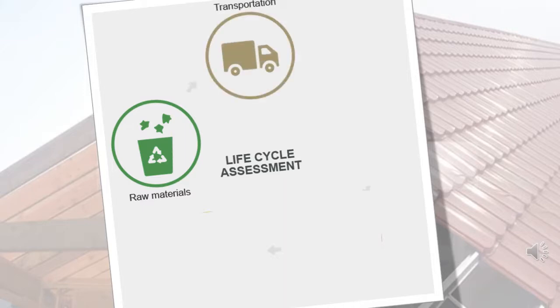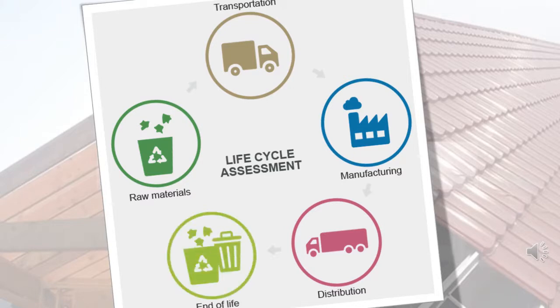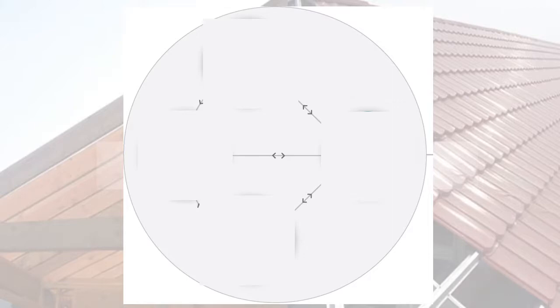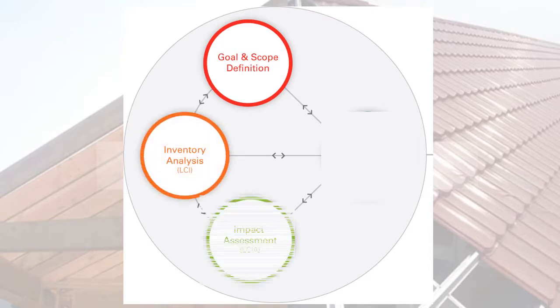LCA, or Life Cycle Assessment, is a technique to assess environmental impacts associated with all the stages of a product's life, from raw material extraction through transportation, manufacturing, distribution, use, and disposal after its useful life. LCA is carried out in accordance with the requirements and procedures set by the ISO 14040 and 14044, which consist of four analytical steps: goal and scope definition, life cycle inventory, life cycle impact assessment, and interpretation.